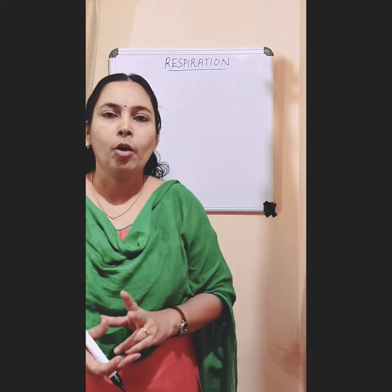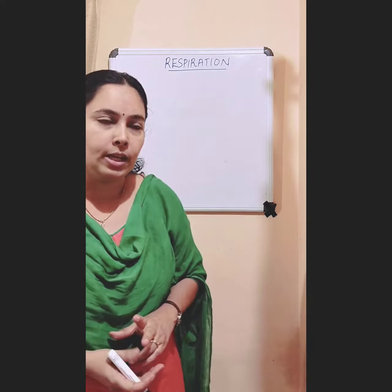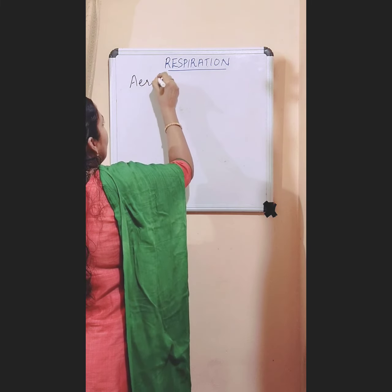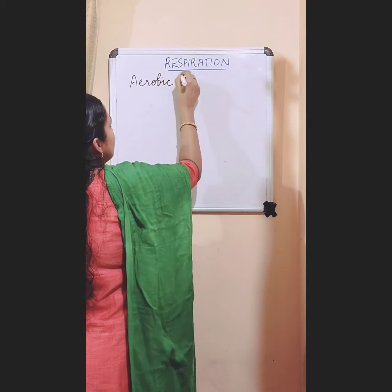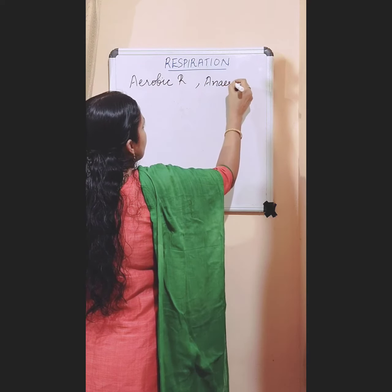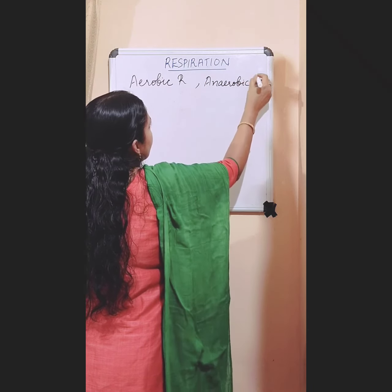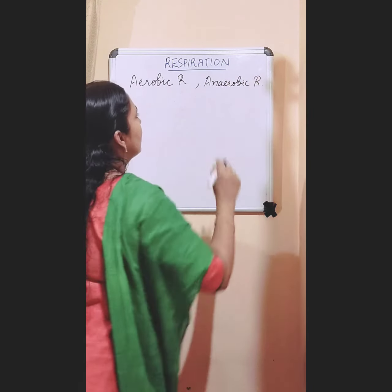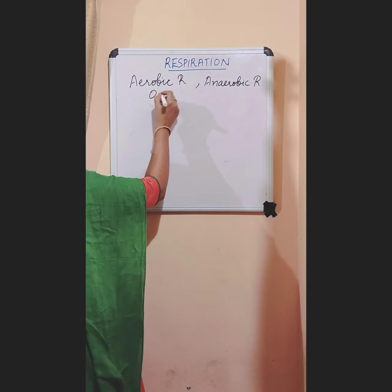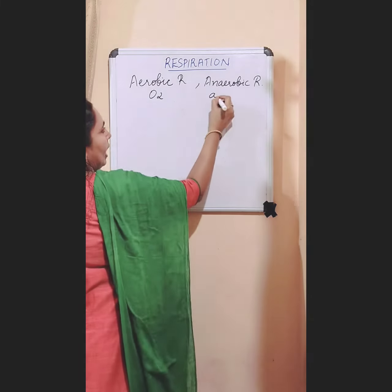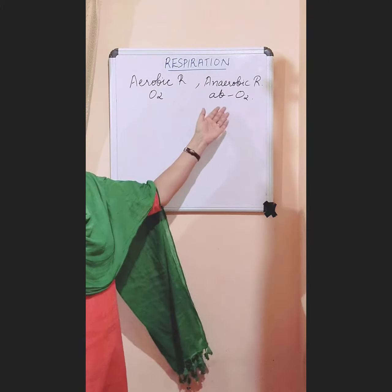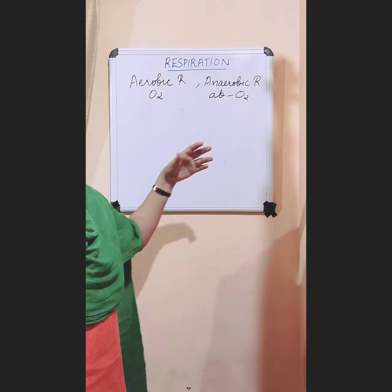And there are two types of respiration: aerobic respiration and anaerobic respiration. Aerobic respiration takes place in the presence of oxygen, and anaerobic respiration takes place in the absence of oxygen.